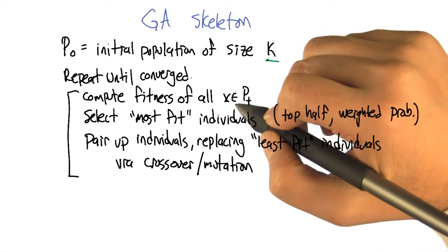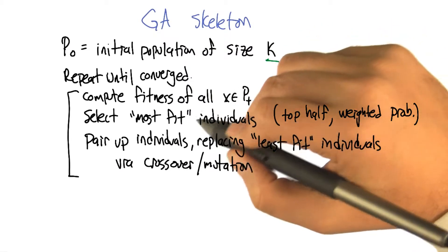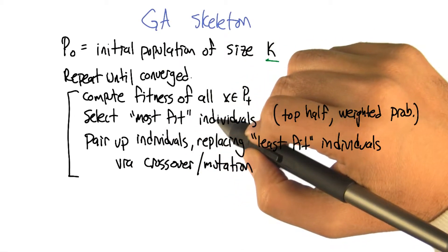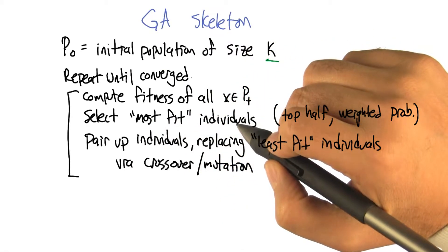So since we applied the fitness function F to all the individuals, we have scores for them. And if we want to select the ones that are most fit, which ones do you think those would be? I guess you're saying those would be the ones with the highest scores. Yeah.